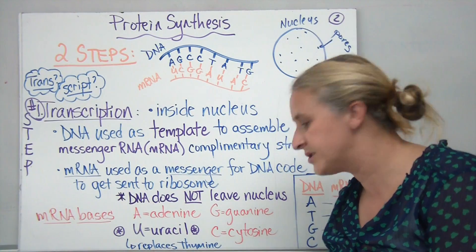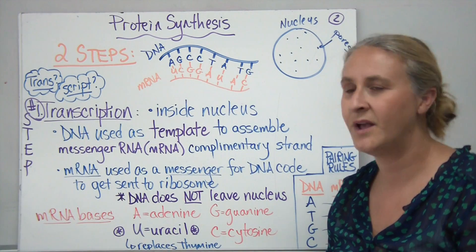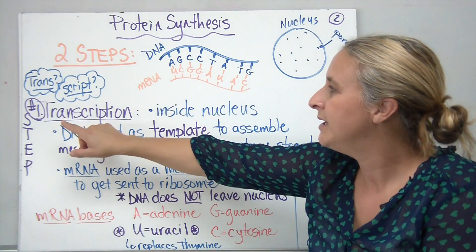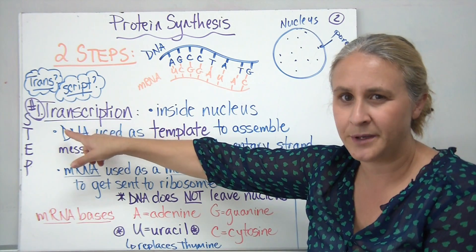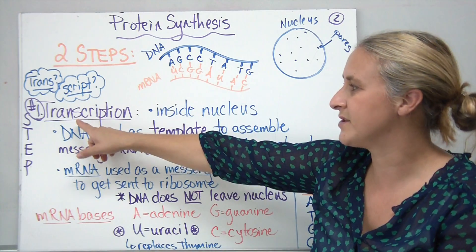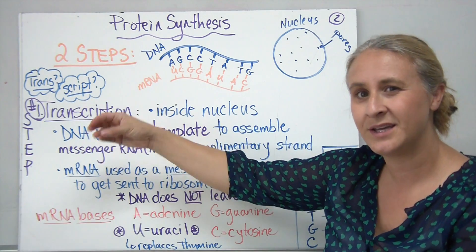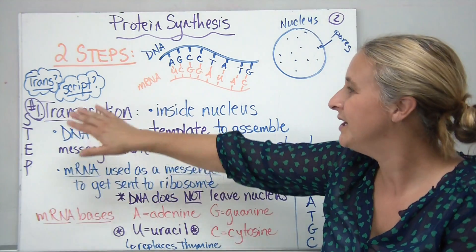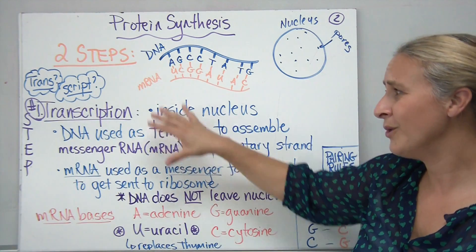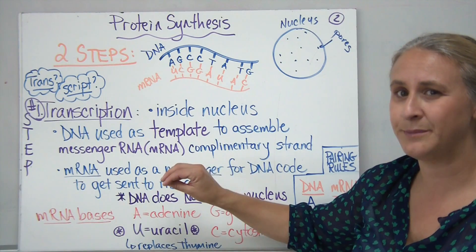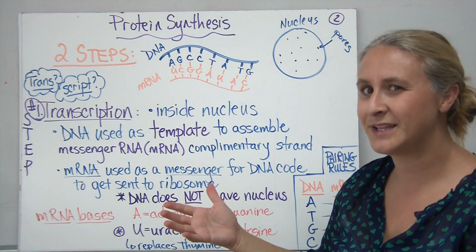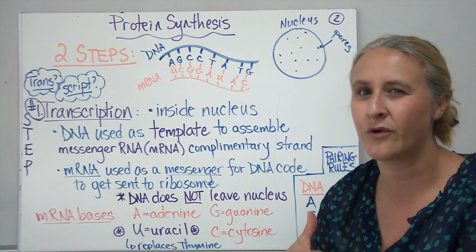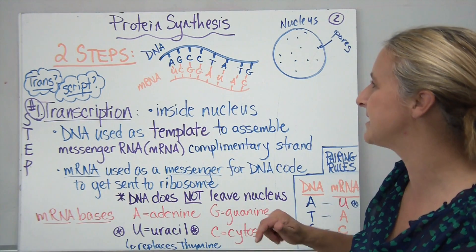Protein synthesis occurs in two main steps. The first step is called transcription. If you break that word apart, 'trans' basically means across and 'script' means to write — think of a scribe. So transcription means we're going to be writing something down and it has to travel across somewhere, and you'll see where that becomes significant in a moment.